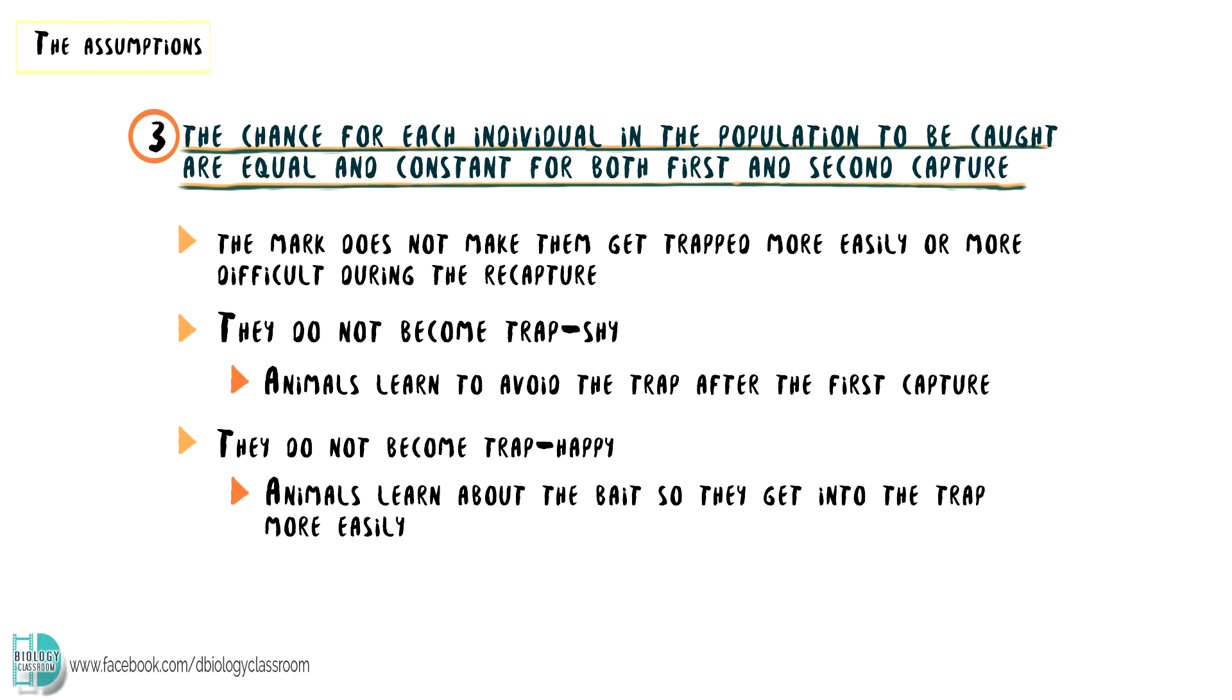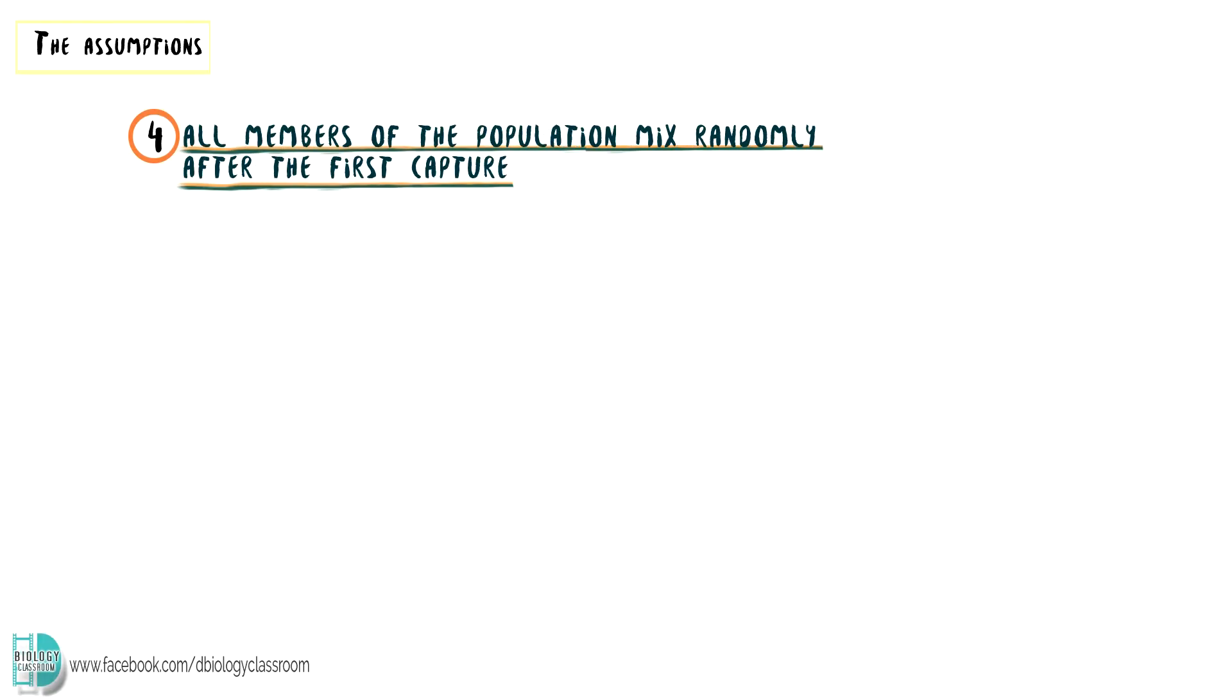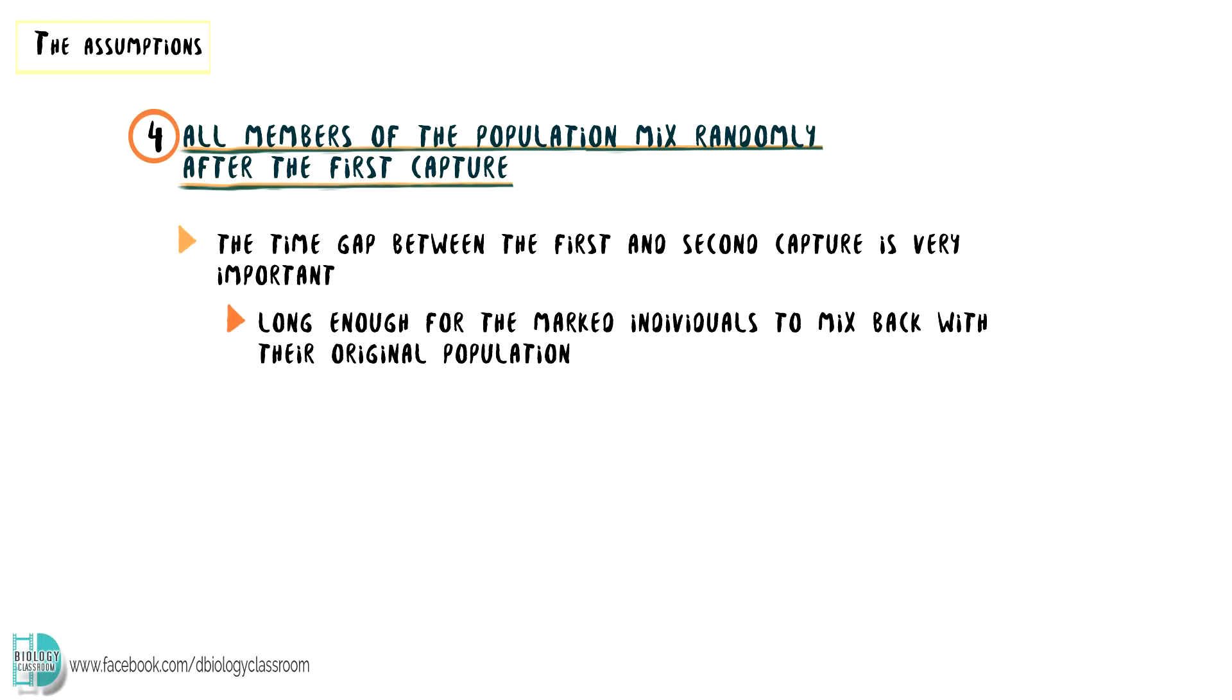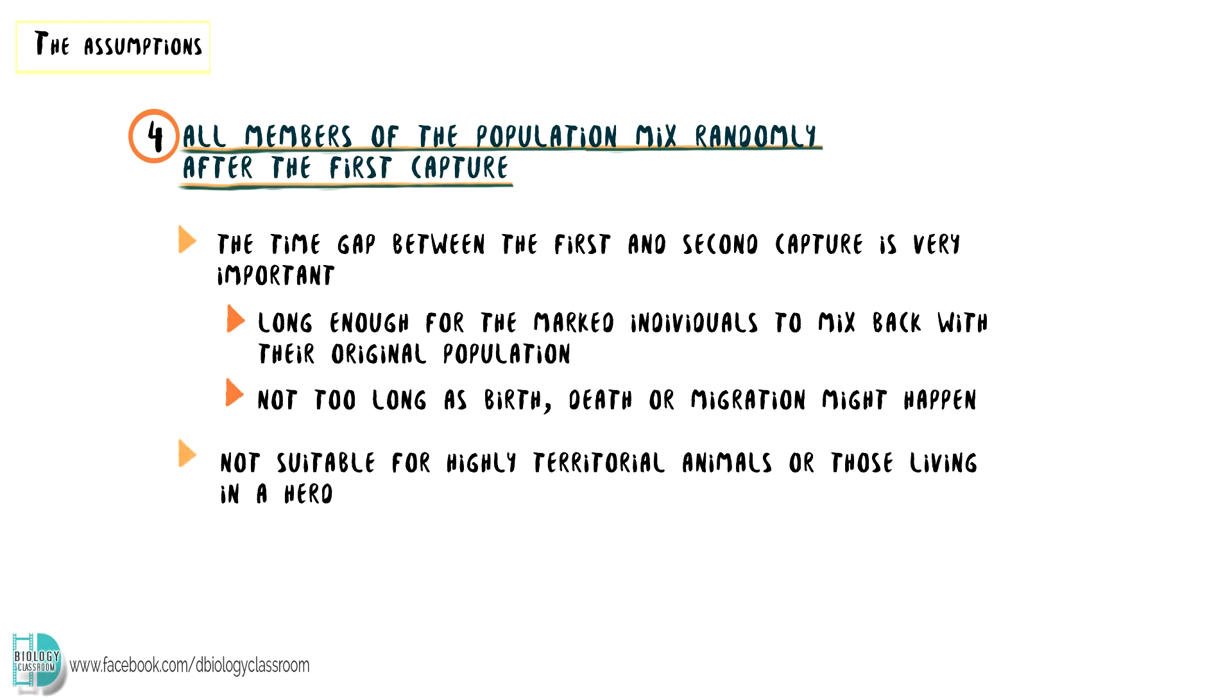The fourth assumption is that all members of the population mix randomly after the first capture. The time gap between the first and second capture is very important. It has to be long enough for the marked individuals to mix back with their original population, but not too long as birth, death, or migration might happen. That's why this technique is not suitable for highly territorial animals or those living in a herd.